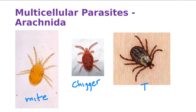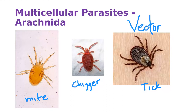The tick and the mite can also be vectors. Someone remind me why we're interested in insects and arachnids — because they're vectors. A vector is an organism that can transmit an infectious agent from one organism to another, from a dog to a human, or from a human to a human.